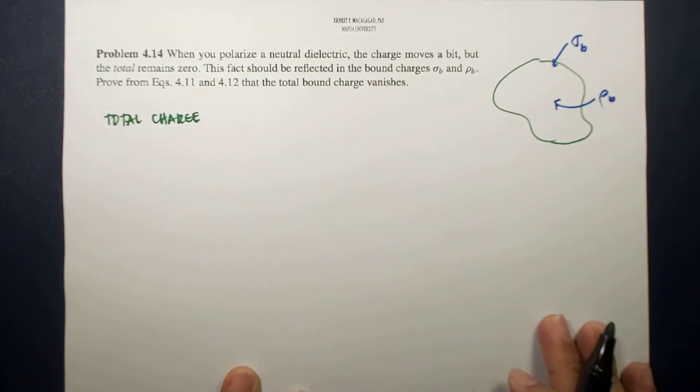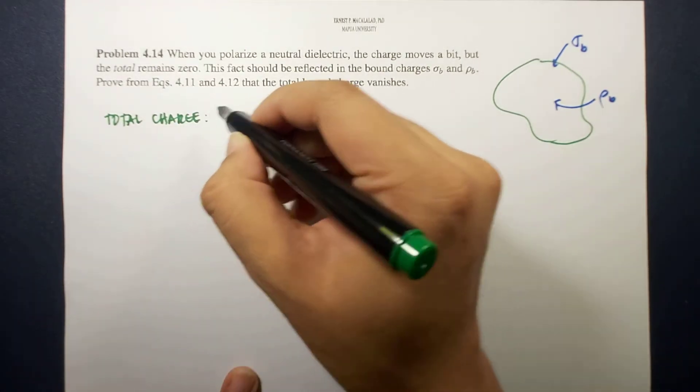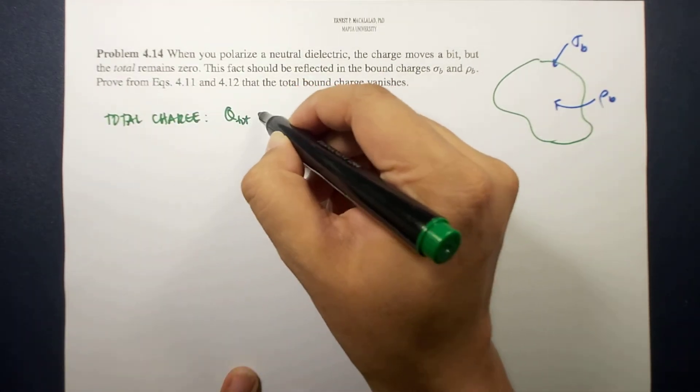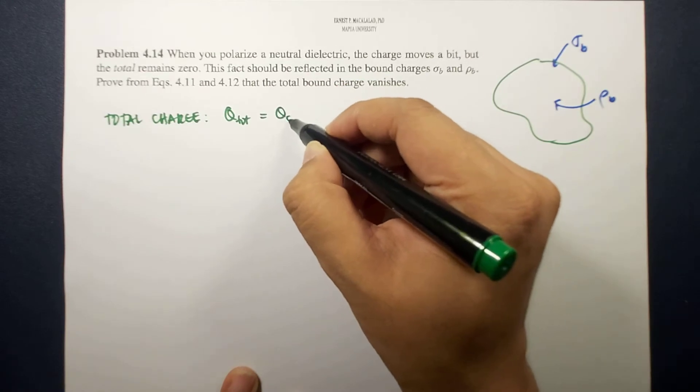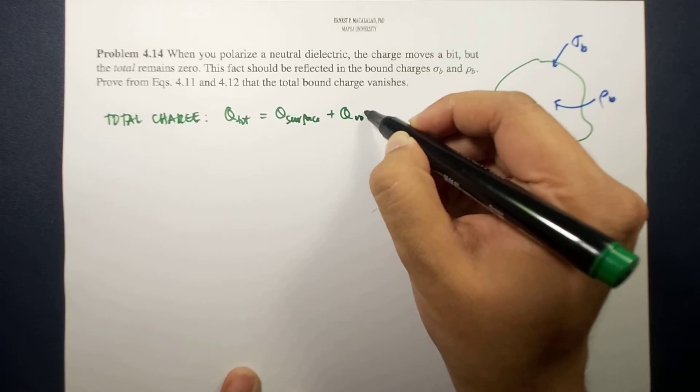The total charge for this configuration is the total charge on the surface plus the total charge within the volume.